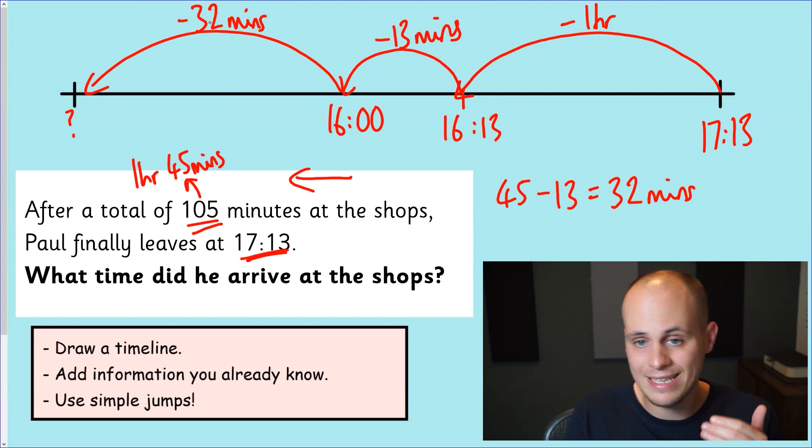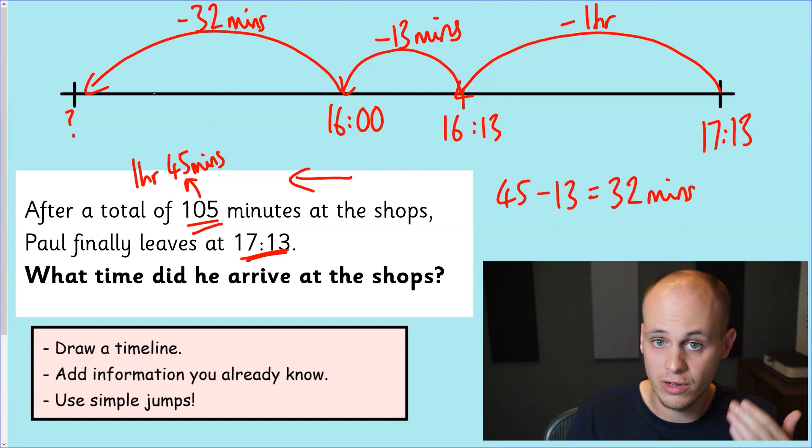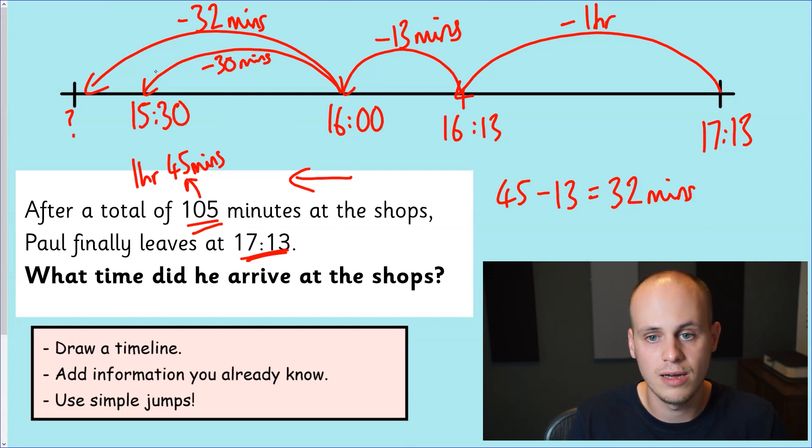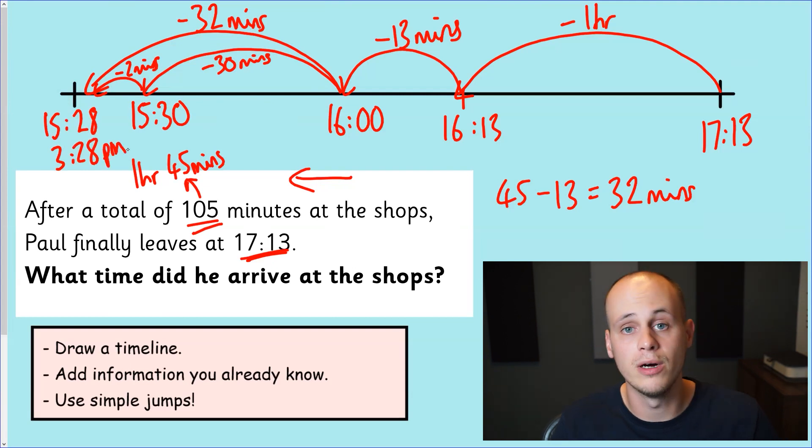We know that our last jump needs to be 32 minutes back in time. Now, if you really want to, you could break this down into two jumps as well. You could take off 30 minutes because that's half an hour. In fact, I'm going to do it for this video. Take off 30 minutes. Taking off 30 minutes gets us half an hour before 4 o'clock, which is, of course, half past 3. So 15:30. And then we can just take off those final two minutes. You do whatever you think is going to break it down enough that you're feeling accurate and confident. You might have done that 32-minute jump in your head, but some of you might have appreciated breaking it down further. If we take off two more minutes, so 30 take away two, we're going to be left with our final time, the answer we're looking for, which is, of course, 15:28 or 3:28 p.m. And that's it. It really is as simple as that. Simple jumps, add the information you already know, and we'll get there eventually.